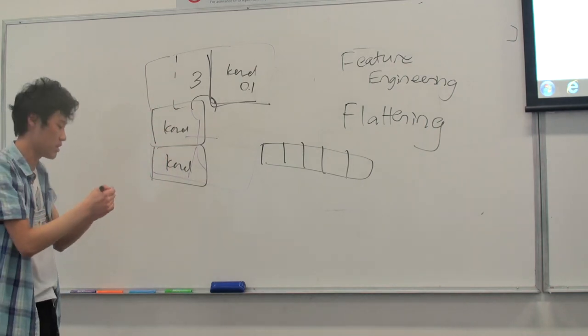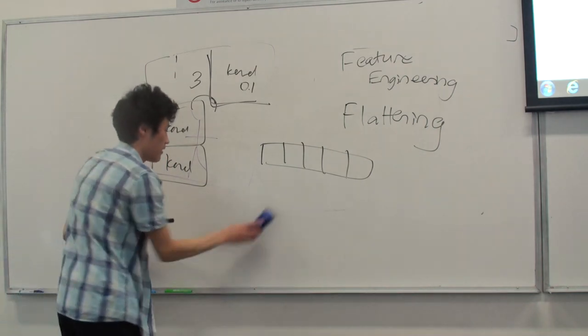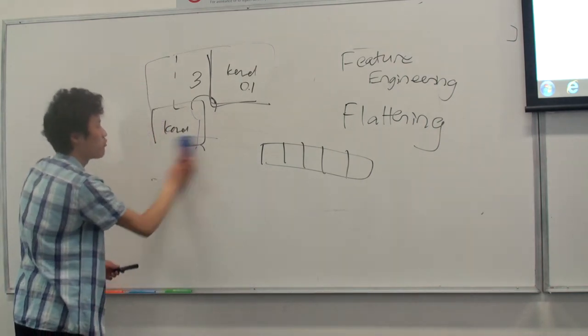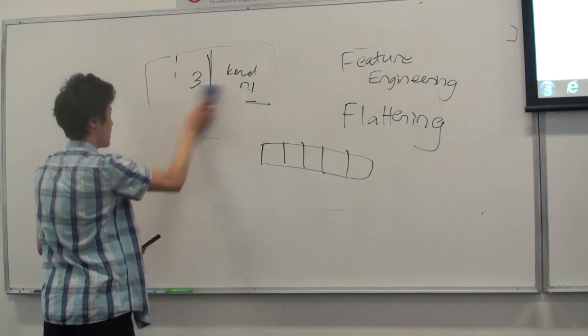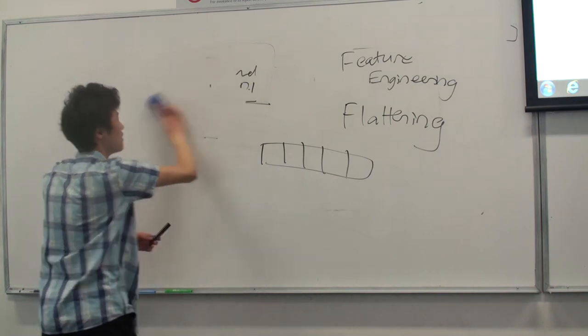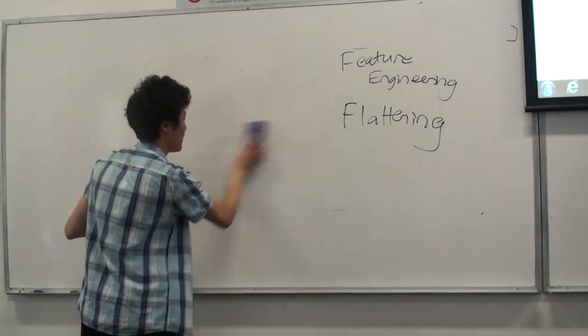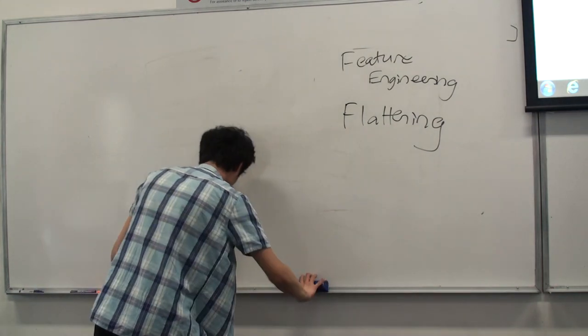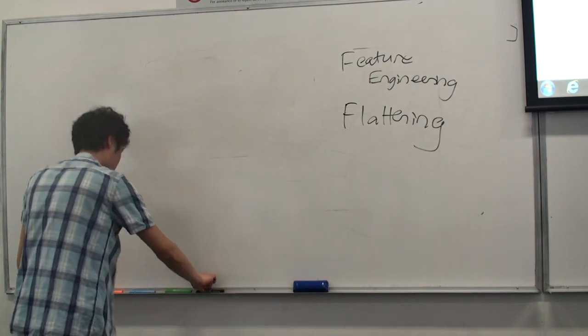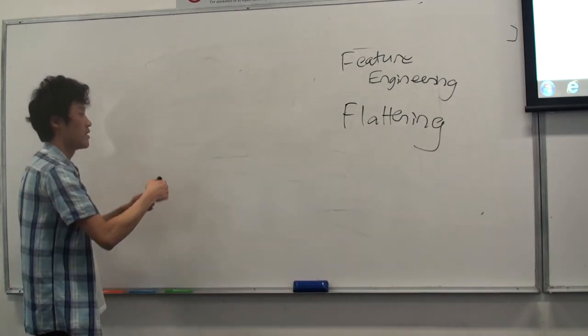This is called convolutions: we subset a tiny image inside the image, shift it across multiple areas. Once we reach the end of a row, we go down. We look at the image in tiny segments and compute the total sum of what we see in each segment.